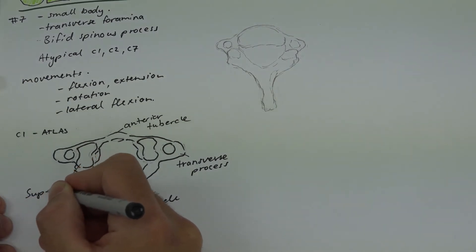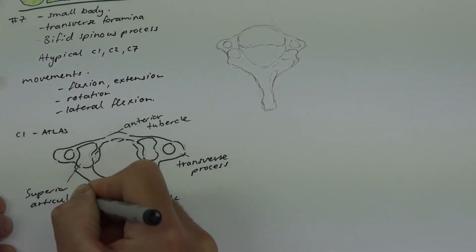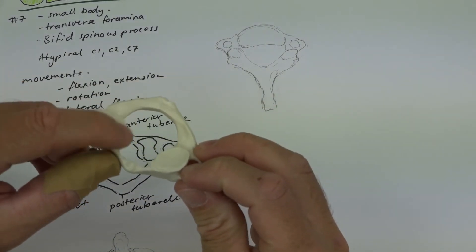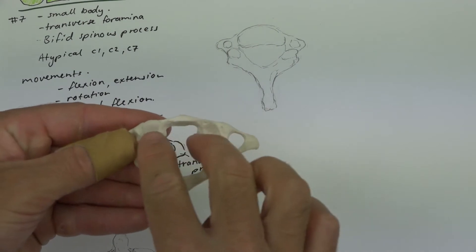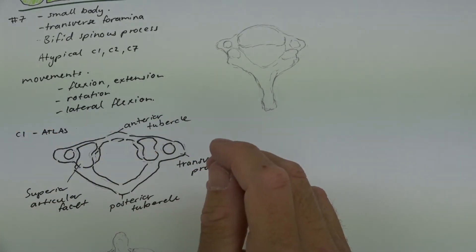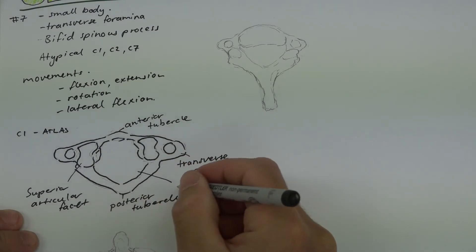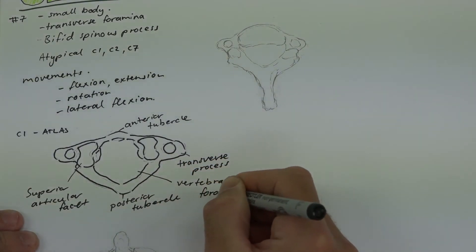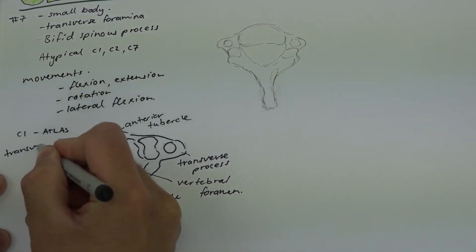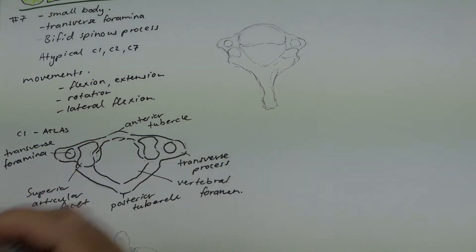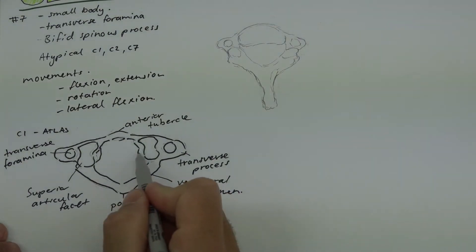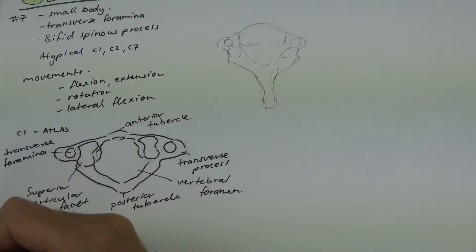The rest of our vertebrae have a spinous process, whereas the atlas only has a posterior tubercle — another reason why it is classed as atypical. This part is called the superior articular facet. Each vertebra has a superior and an inferior articular facet — the bone above lies on the superior, and the bone below articulates with the inferior. There is also the large vertebral foramen carrying the spinal cord, the transverse foramina for the vertebral artery, and lateral masses.